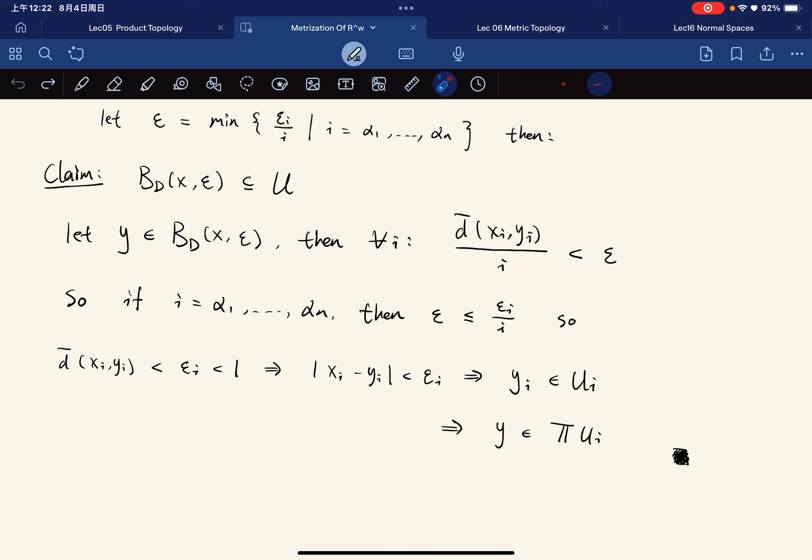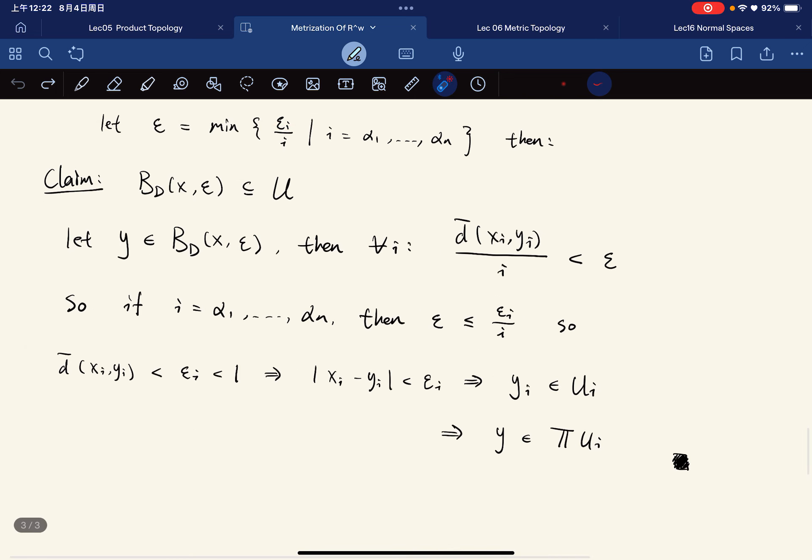And we require εᵢ is less than 1. So this is less than 1, so that this becomes the standard metric. It's not the bounded metric anymore. It's the original absolute value thing. It's less than εᵢ.